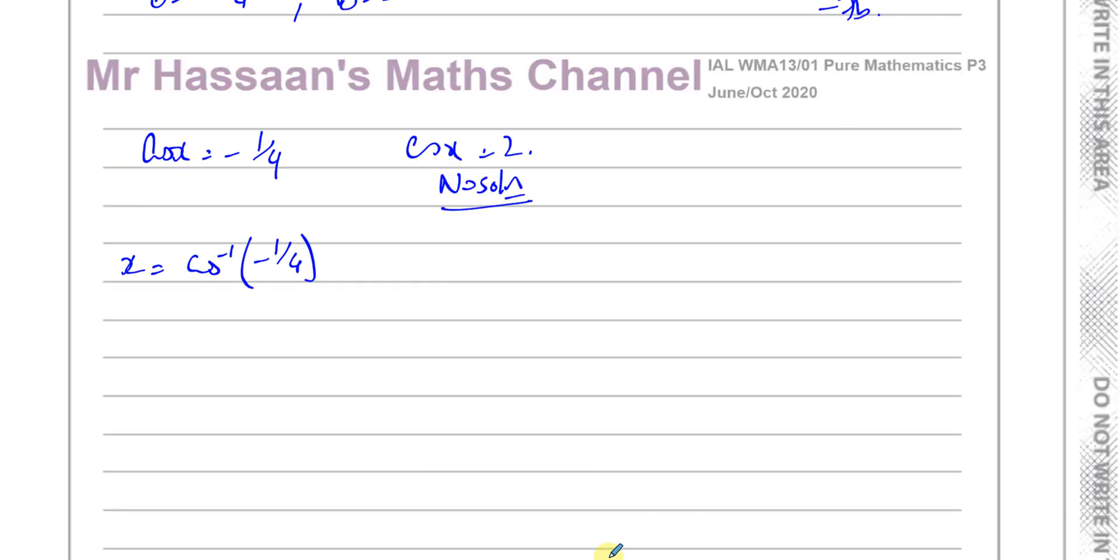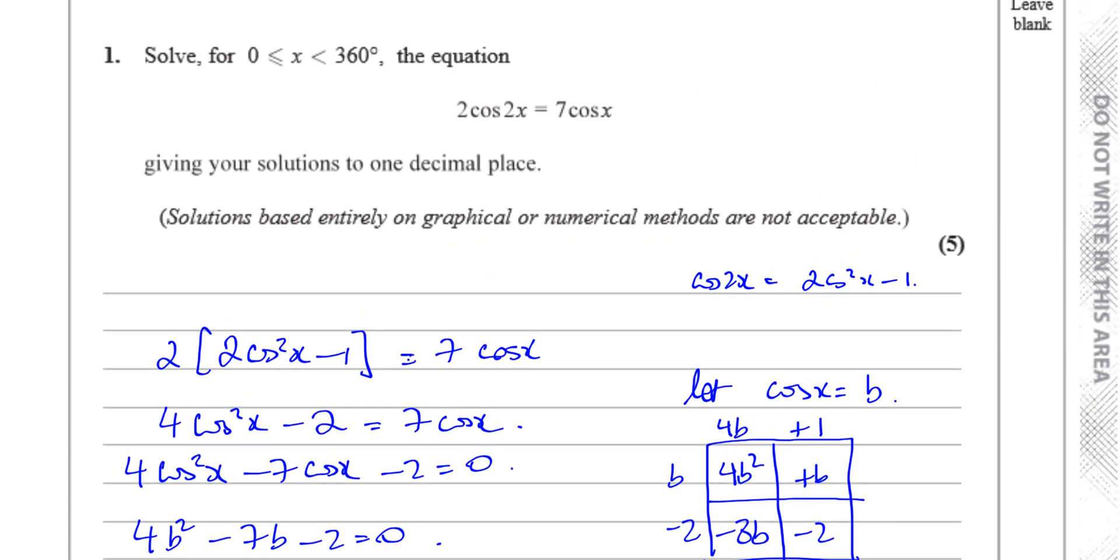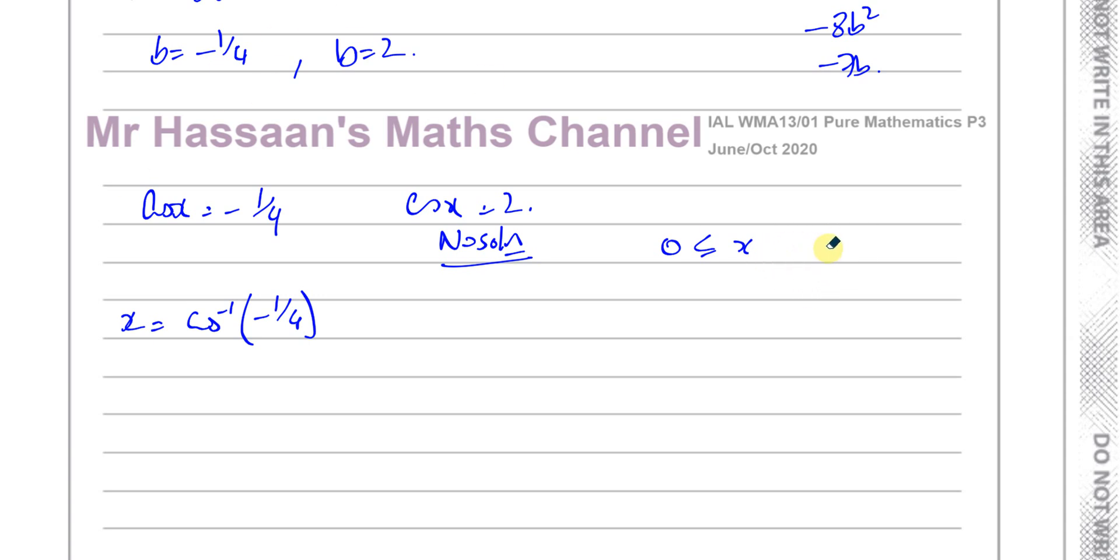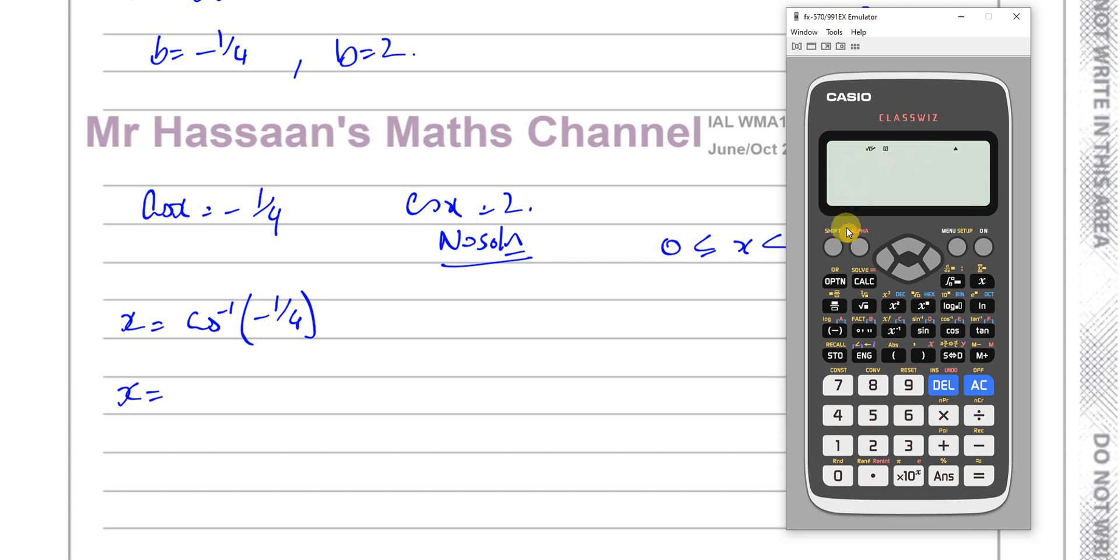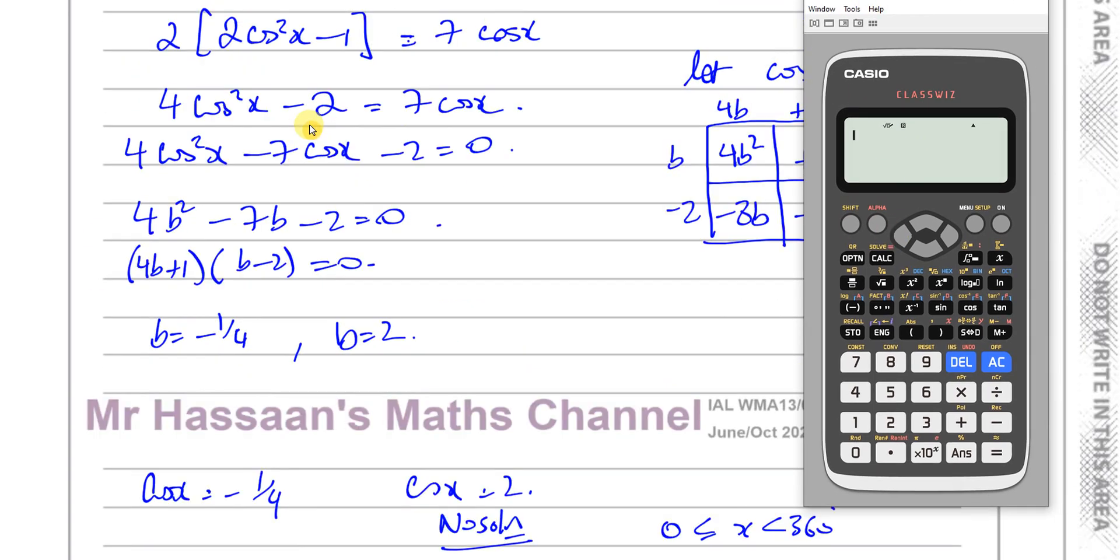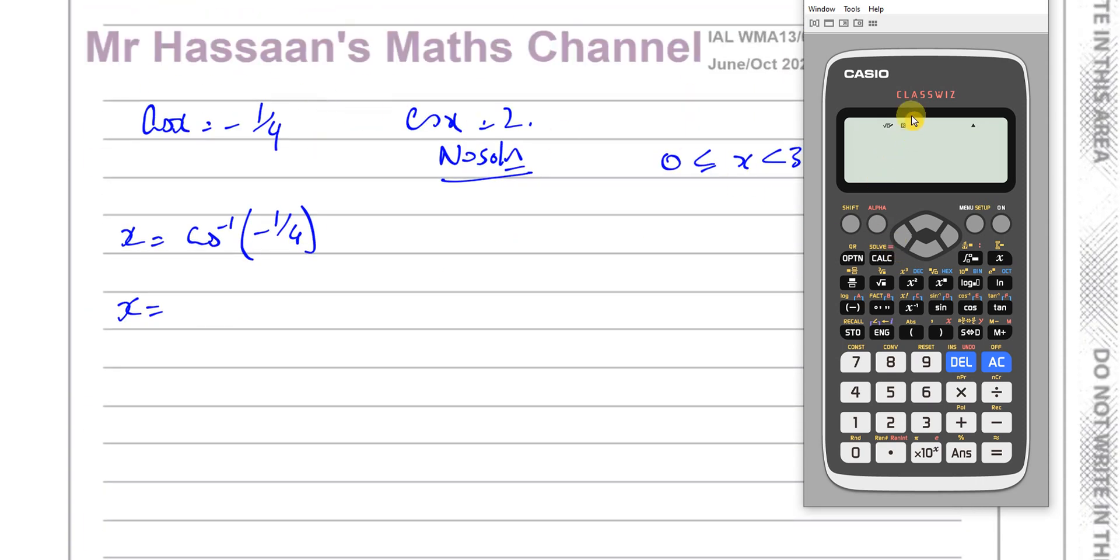We've got to solve this for values of x between 0 and 360 degrees. So the first angle we're going to get, inverse cosine of negative a quarter, we take our calculator and put it into degree mode because we want to find it in degrees and it tells us to one decimal place which is normally what you do anyway. So change to degrees, shift menu angle input, degree mode and then inverse cosine of negative a quarter.